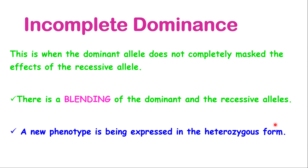Now let's look at incomplete dominance — this is where things get a little more interesting. In incomplete dominance, the dominant allele does not completely mask the effects of the recessive allele. There is what they call a blending of the dominant and the recessive alleles. Blending means they go together and mix to create something new — like putting different ingredients in a blender, you result in something new, maybe a smoothie or a shake. A new phenotype is expressed in the heterozygous form.